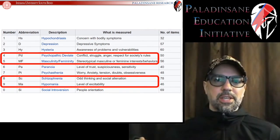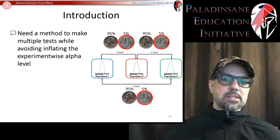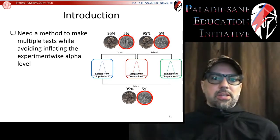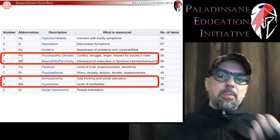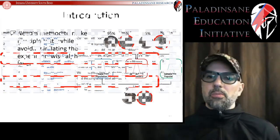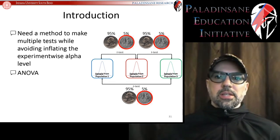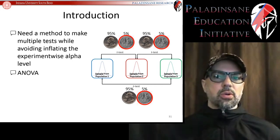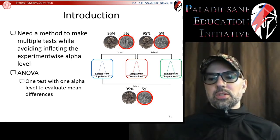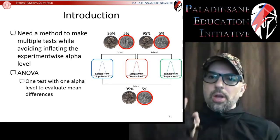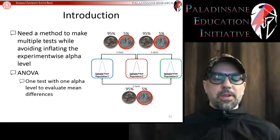A t-test was the wrong test for that situation. We need a new way of doing these tests — one that allows multiple comparisons without inflating the alpha rate. That's where the ANOVA comes in. It is a single test that uses one alpha level to simultaneously test all of the means at once, rather than doing one-by-one comparisons.